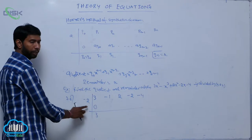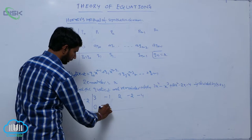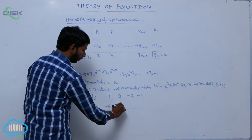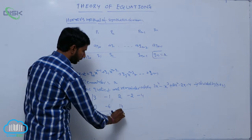3 into -2, there is -6. Adding these two, there is -7. -7 into -2, there is +14. 14 plus 2 is equal to 16.